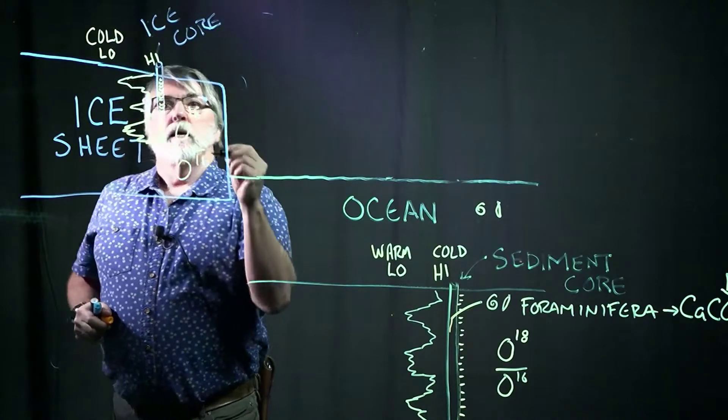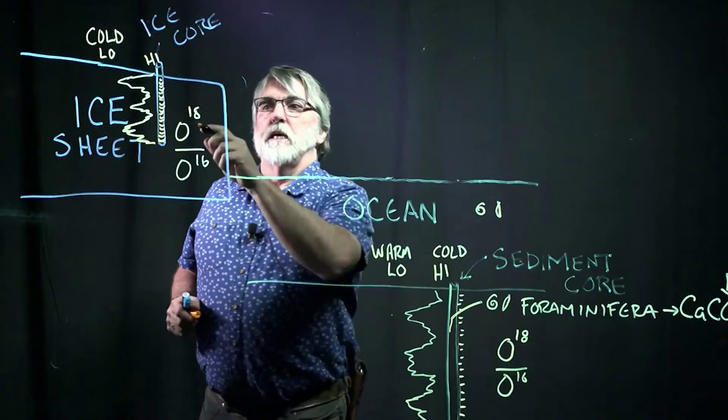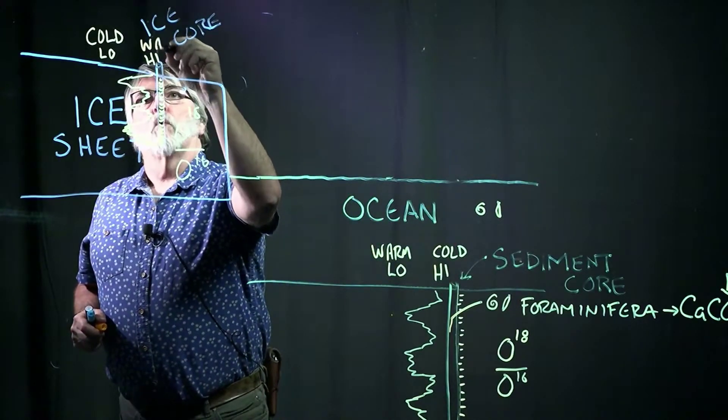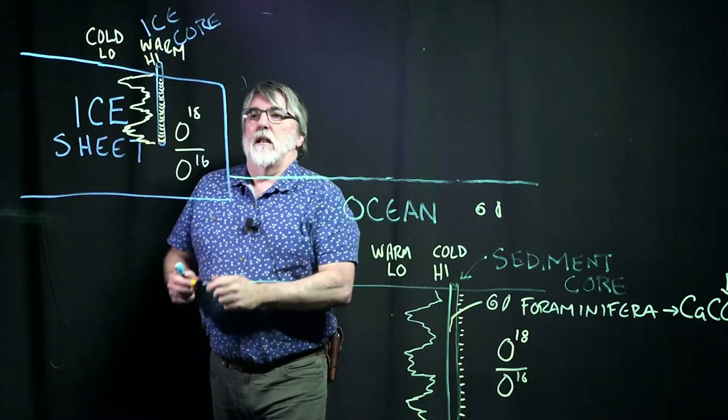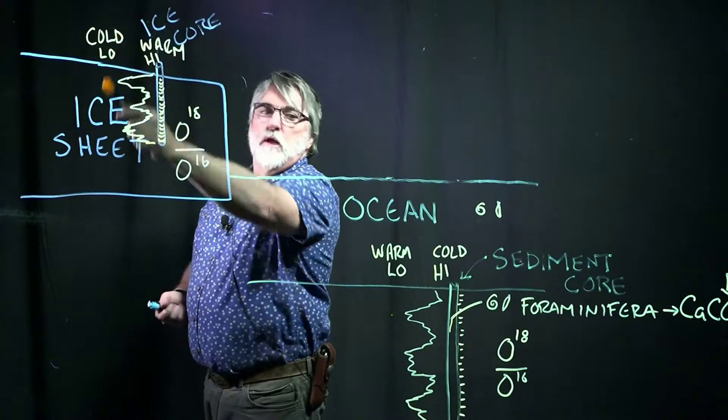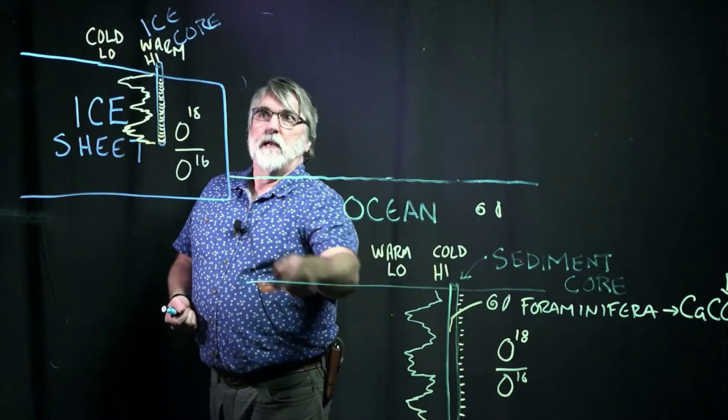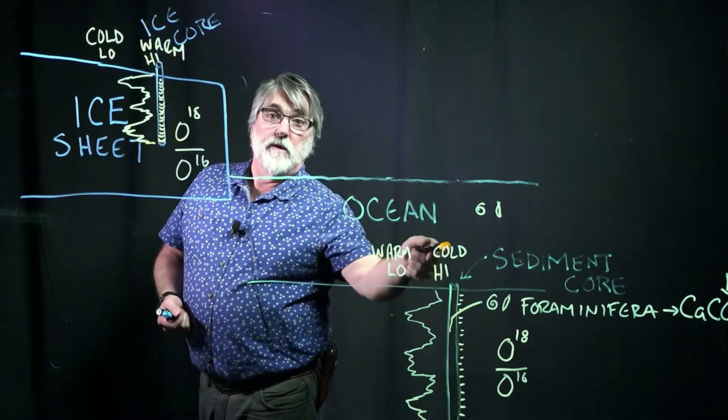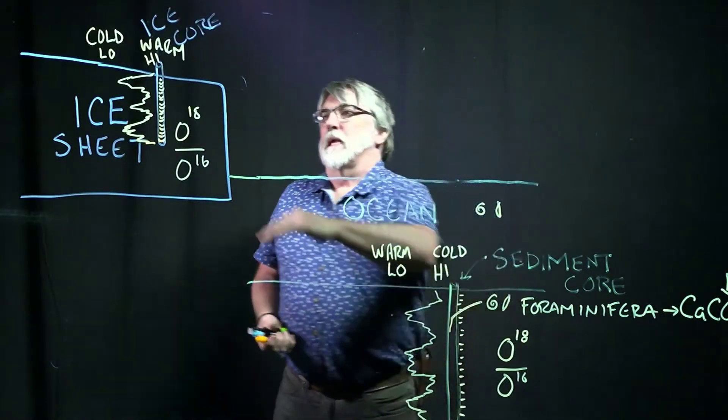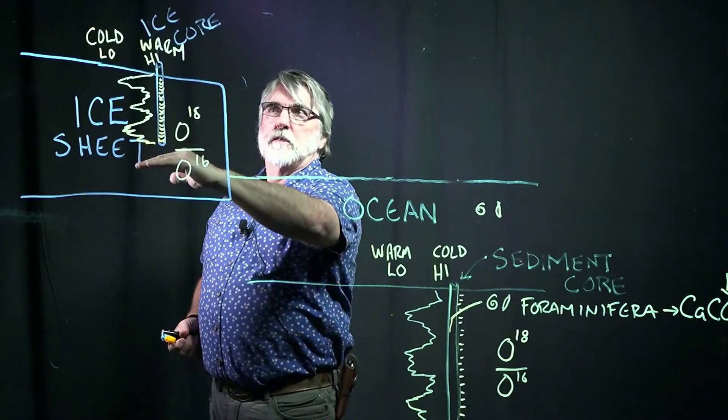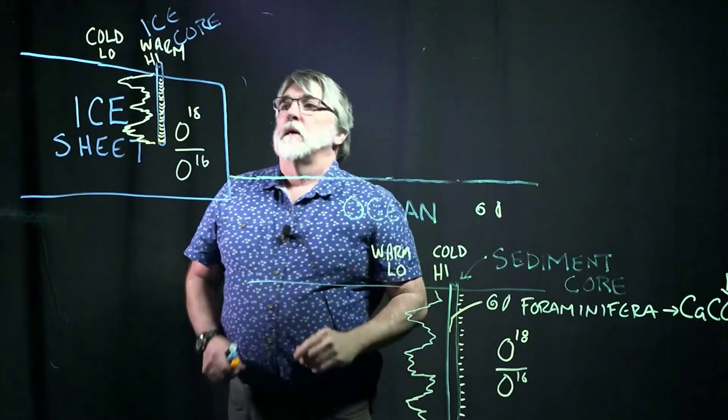And when it's higher, we're taking that O16, putting it into the oceans. This number is going up. So now this is warm. So you'll notice that in the ice, low values are cold. In the marine setting, warm values are low. And here high values are warm and here high values are cold. They're behaving oppositely. And what it means is that ice cores can give us very precise records of changes in isotopes, which are telling us advance and retreat of the ice sheets.